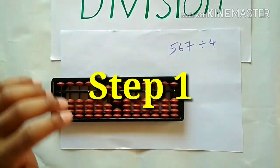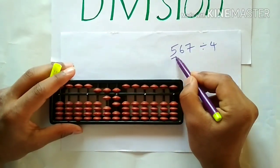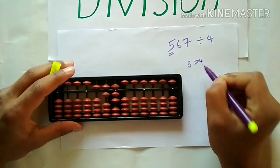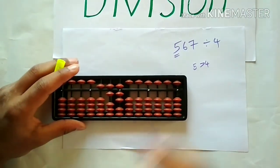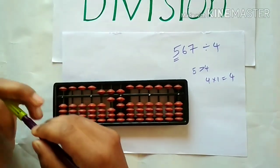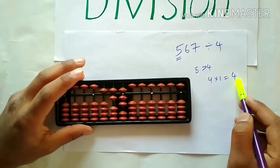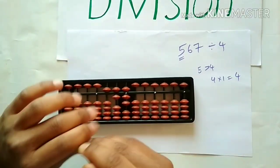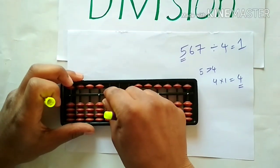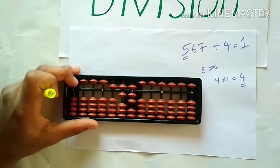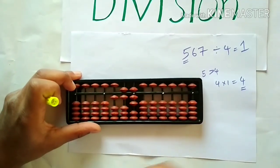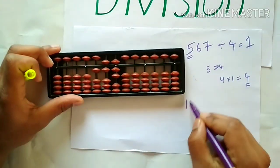Step 1 in abacus division is: check the first digit. Here the first digit is 5, and 5 is greater than 4. We know that in the 4 table, 5 can be subtracted as 4 into 1 is equal to 4. So here 1 is the quotient and 4 is to be subtracted from the abacus. Let's write 1 here and subtract 4 from the 100's round. Here it is small friend subtraction — let's deflect 5 and add the friend 1. Now we are left with 167 on the abacus.